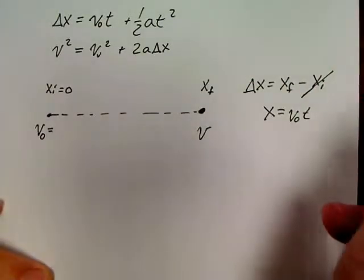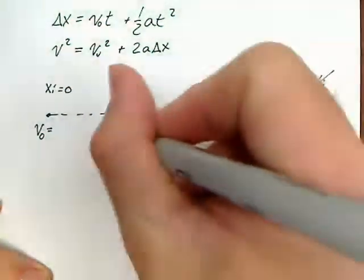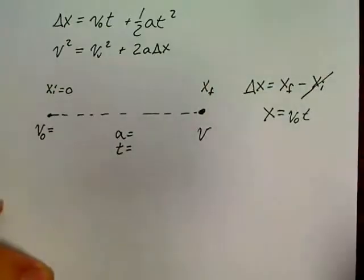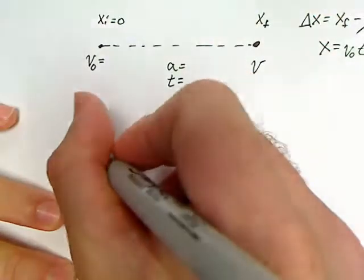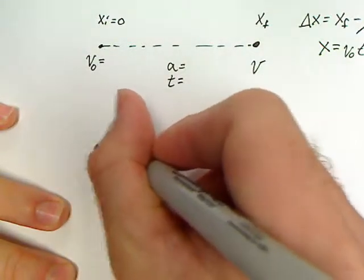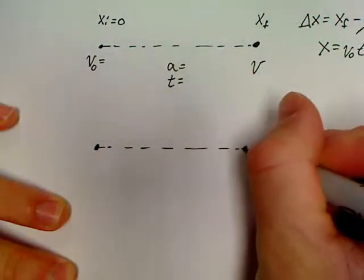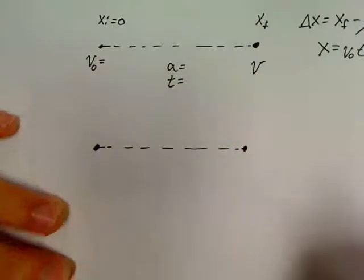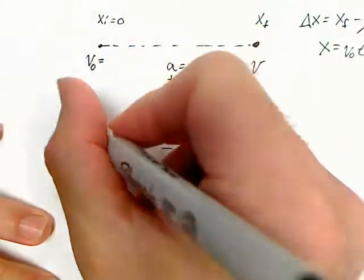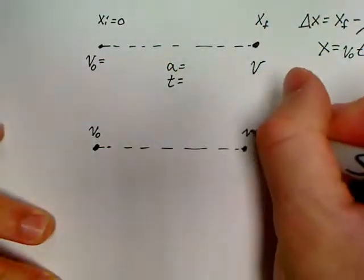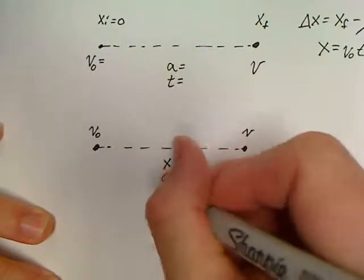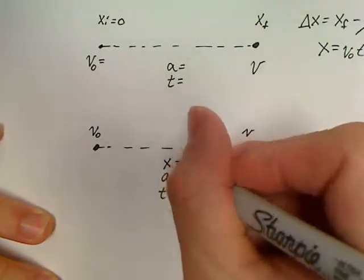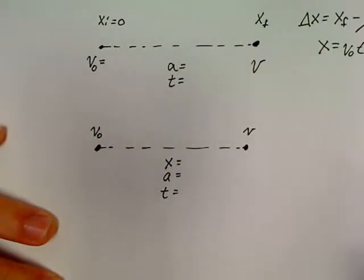These problems will also have an acceleration and they will have a time in the problems. So a generic problem would start off looking like, let's make it look like this. Let's say that V₀, V, X, A, and T are the variables that you'll have in pretty much all these problems.